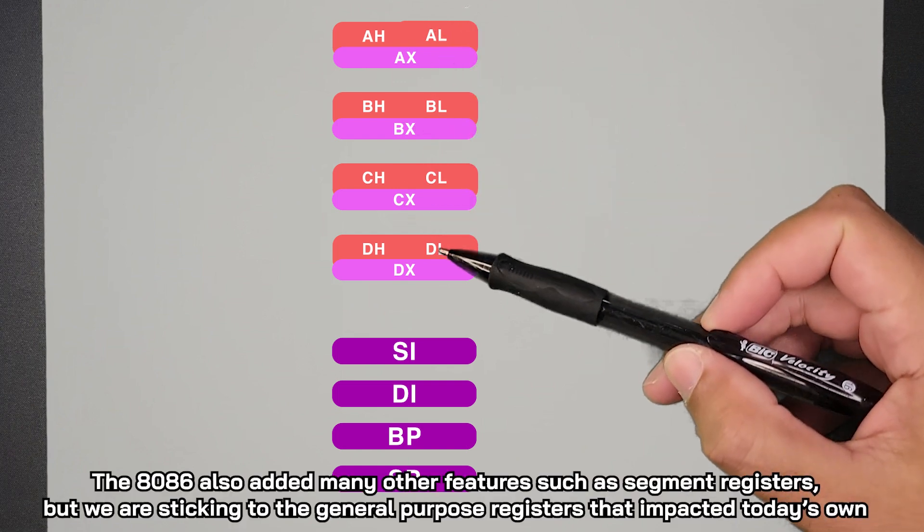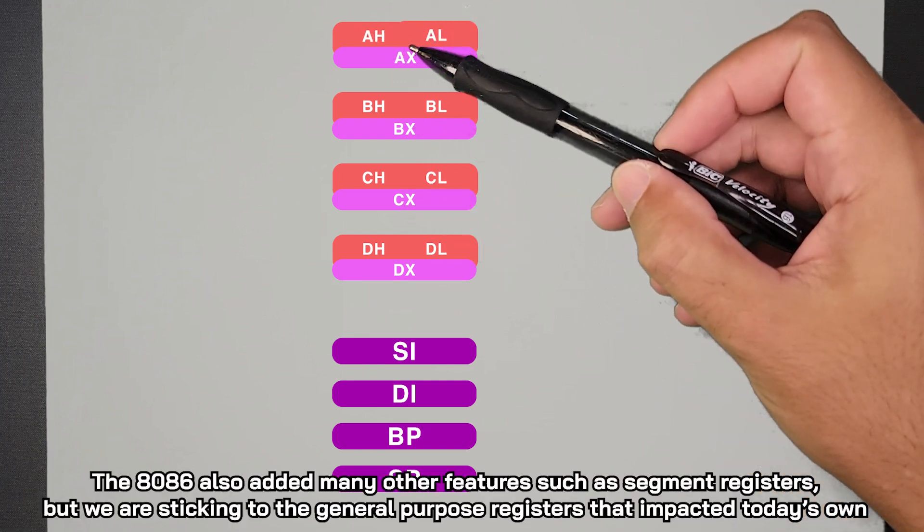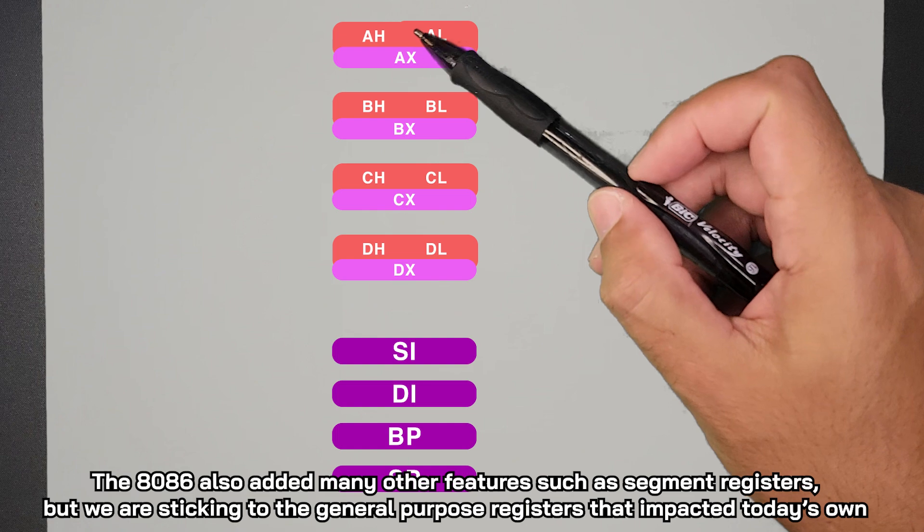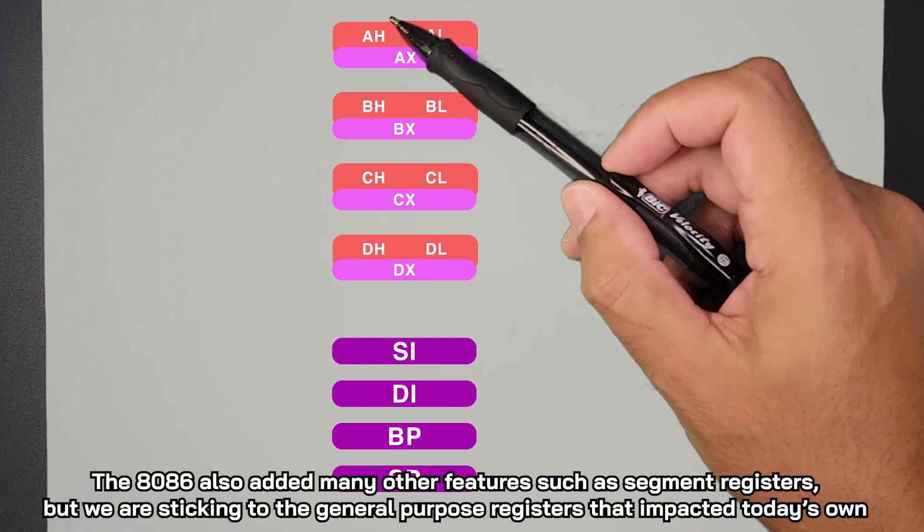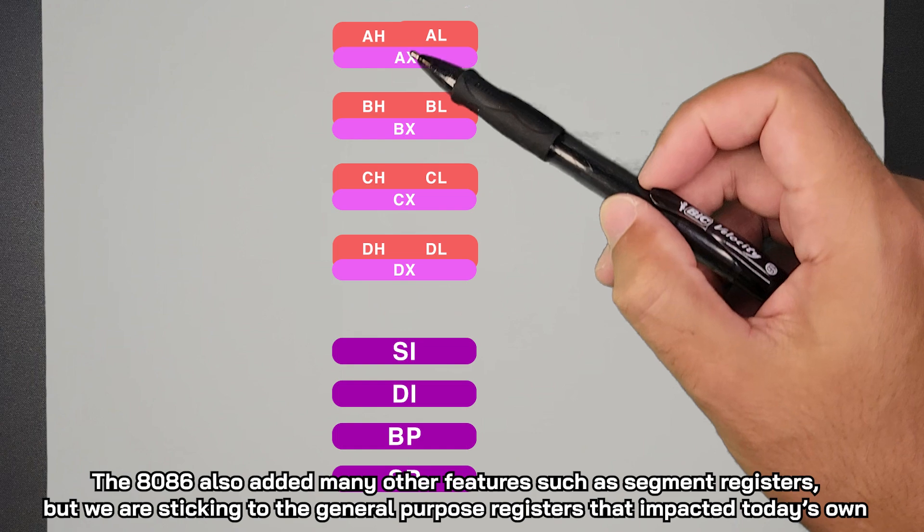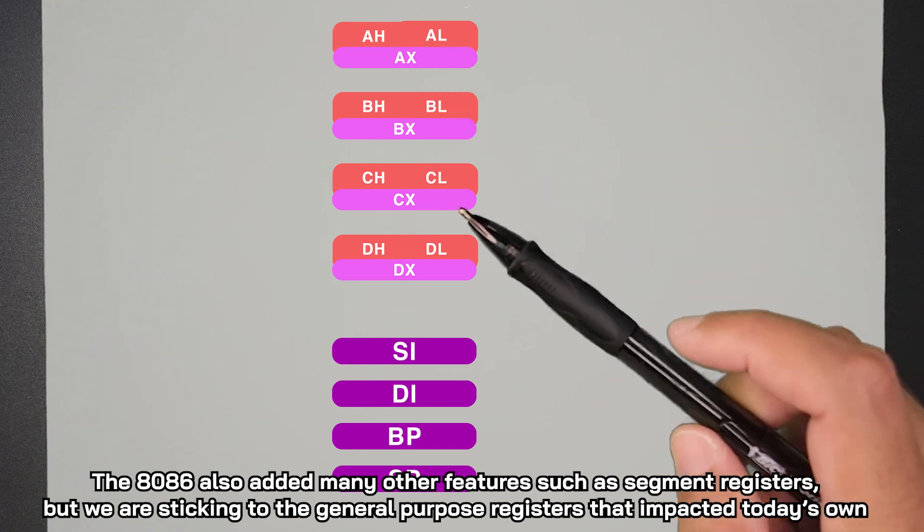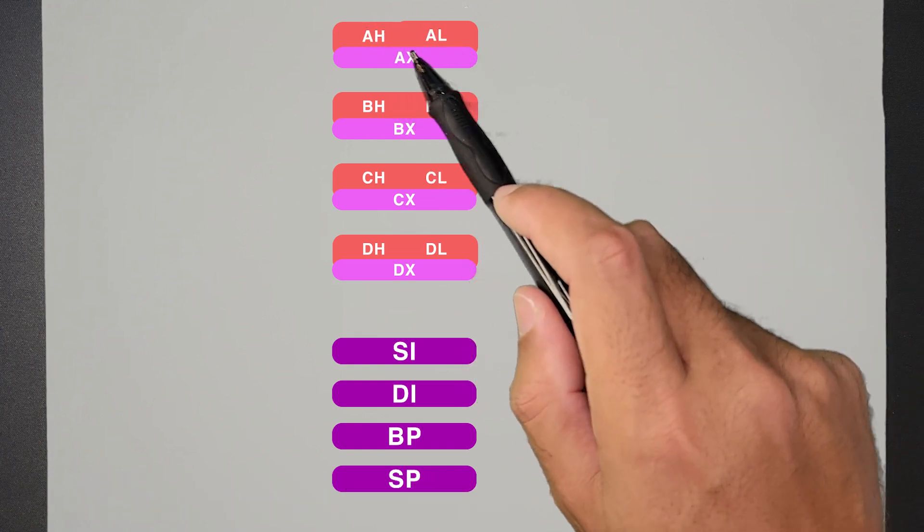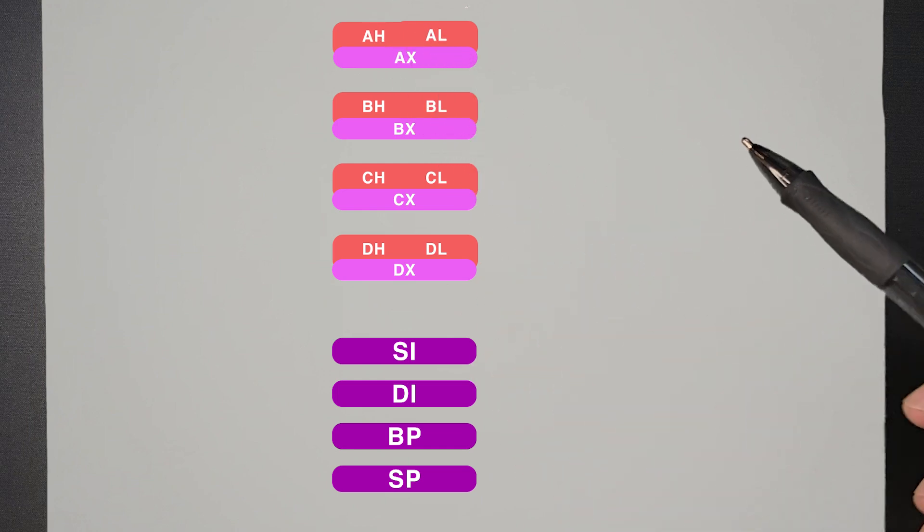So this is how the 8086 transformed things. We took the A, B, C, and D from before 8-bit, turned them into 16-bit, and you could split them up. You can use now two separate 8-bit registers, AL, AH, BL, BH, CL, CH, and so on. Or you can talk to the entire 16-bit register, but it's all part of the same register. You're just able to access different parts of it.